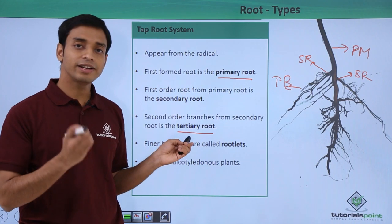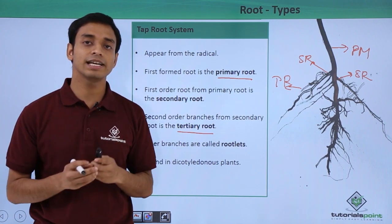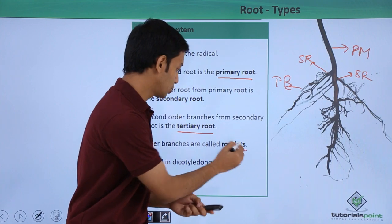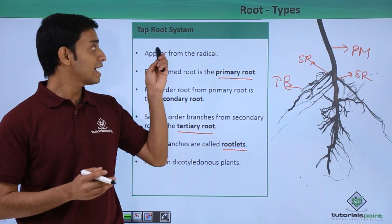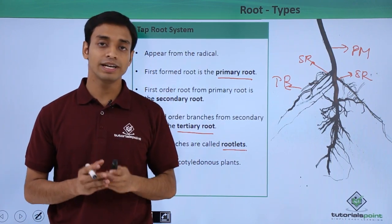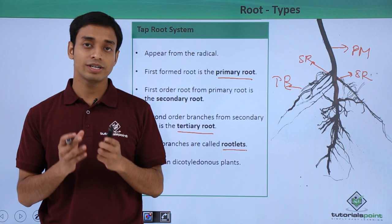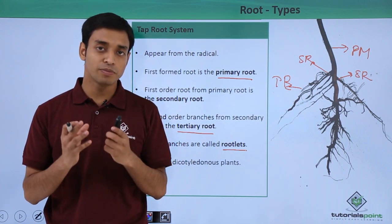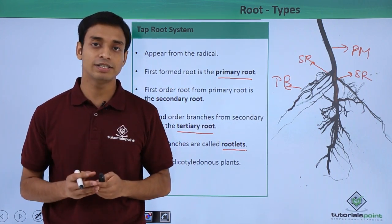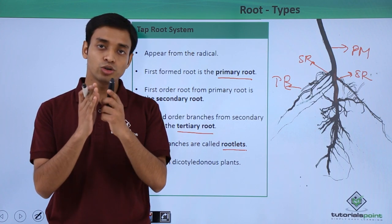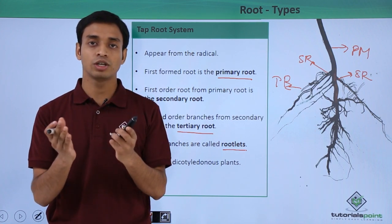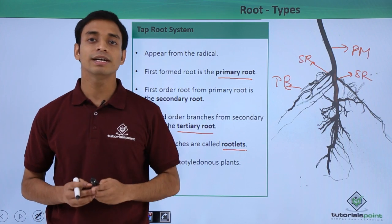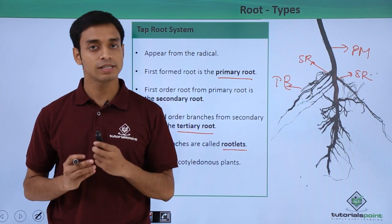There are also very fine hair-like structures on the roots, known as root hairs. The tap root system is mostly found in dicots, or dicotyledonous plants — plants whose seeds can be broken into two equal halves, meaning they have two cotyledons.